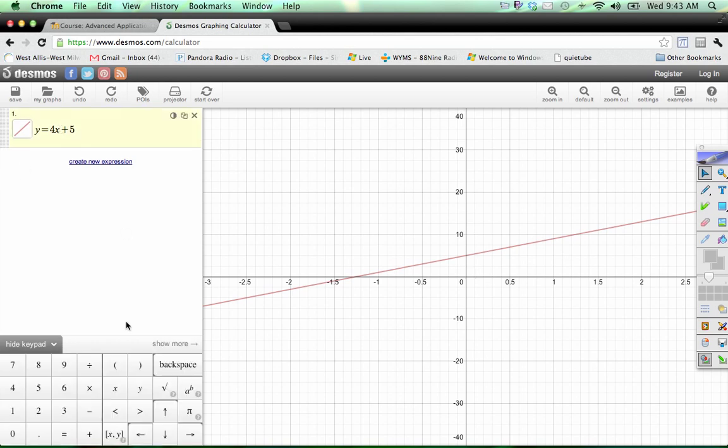Now if I take this x and change it to having an exponent of 2, thus making a quadratic, we see we get a parabola. So quadratics had parabolas.